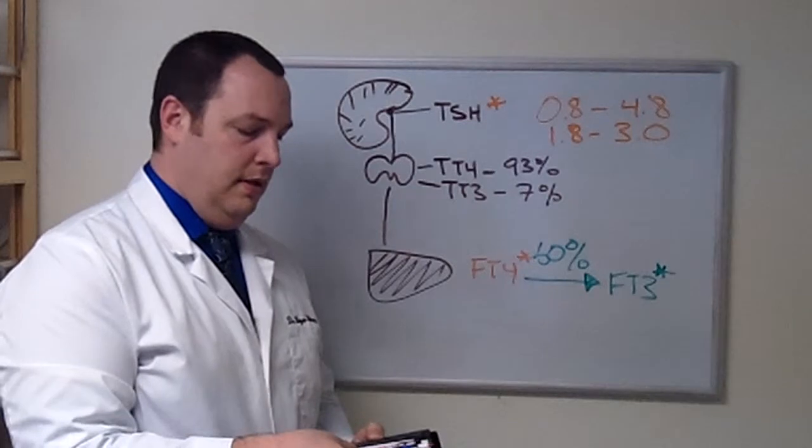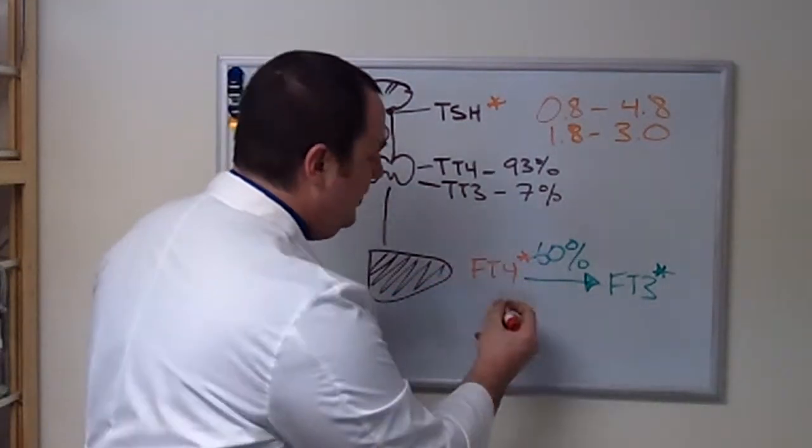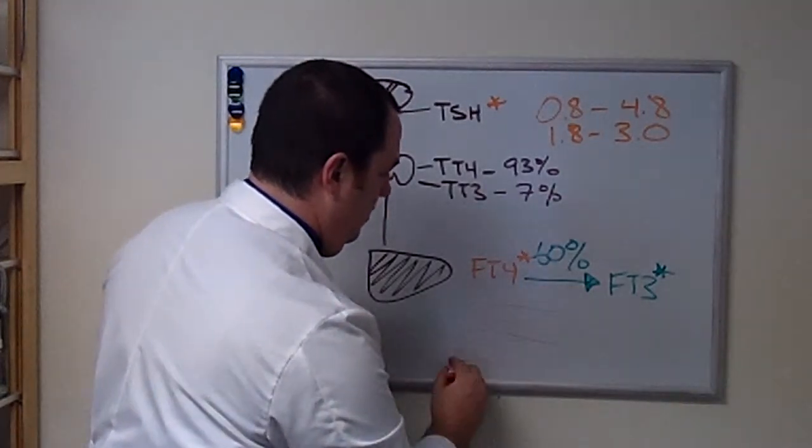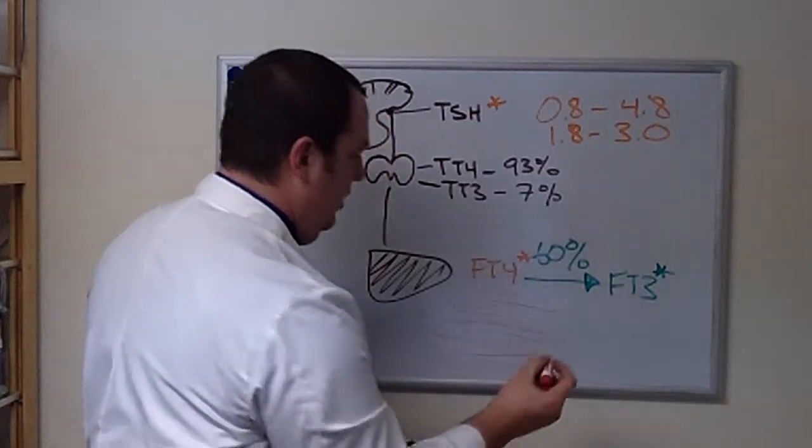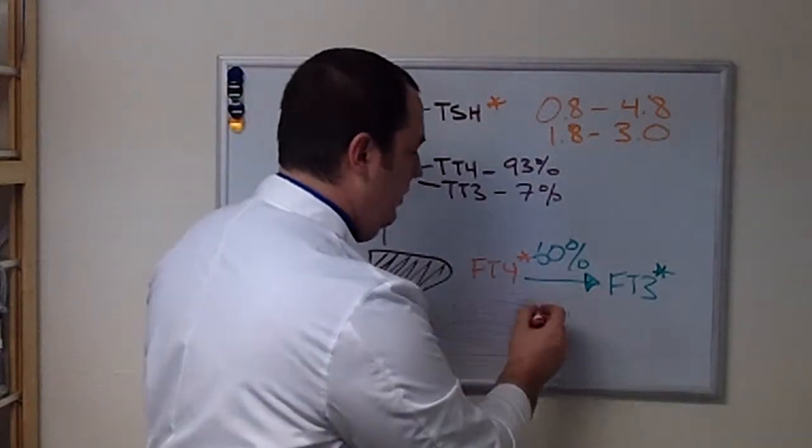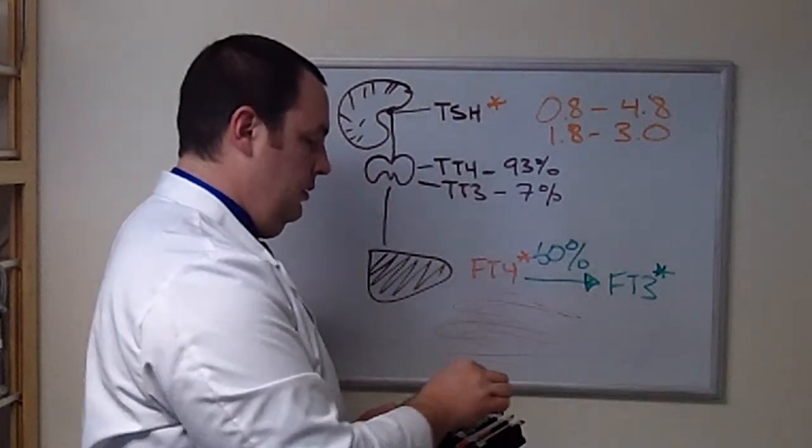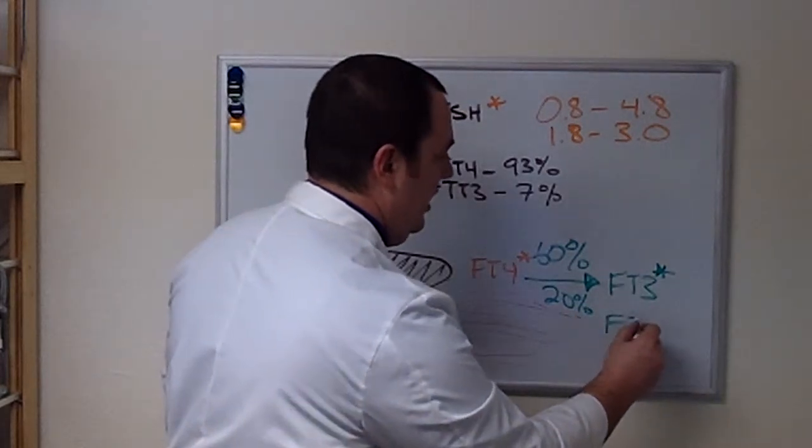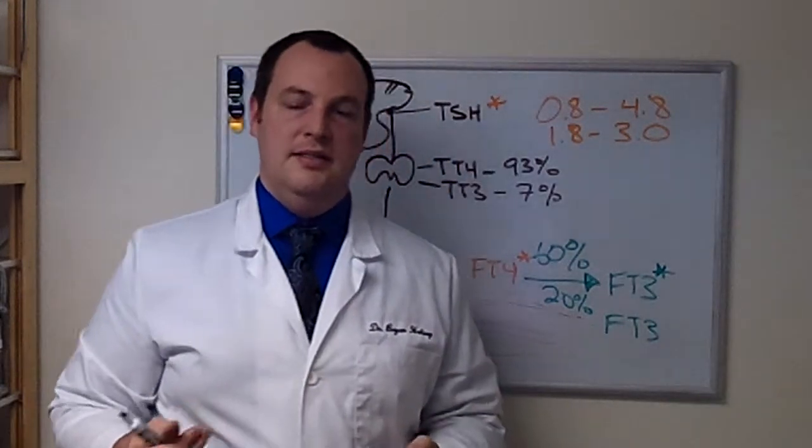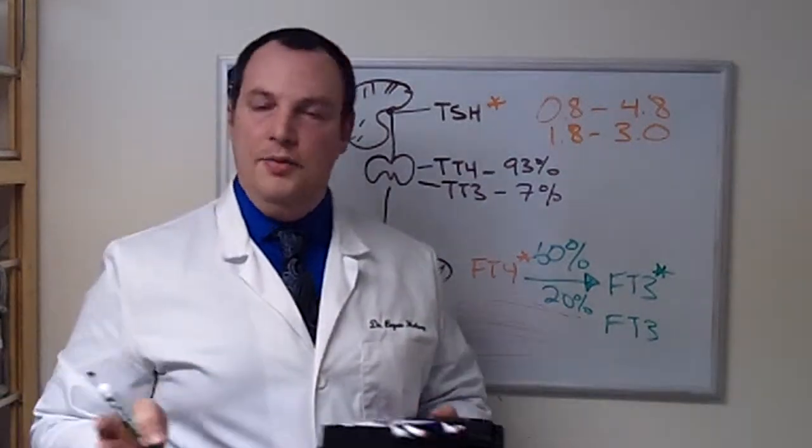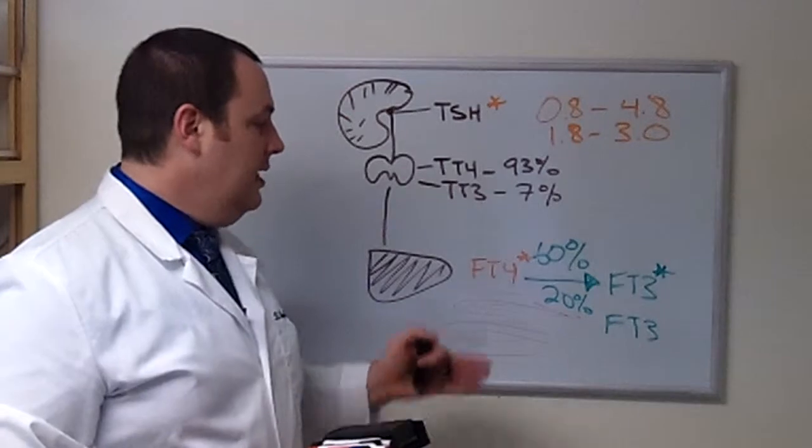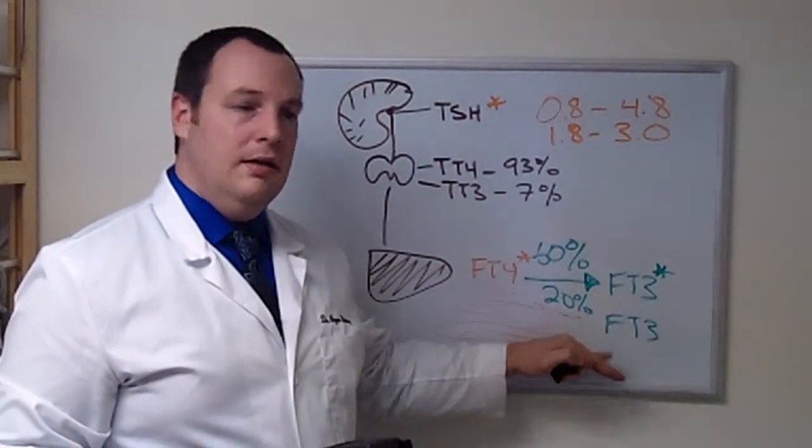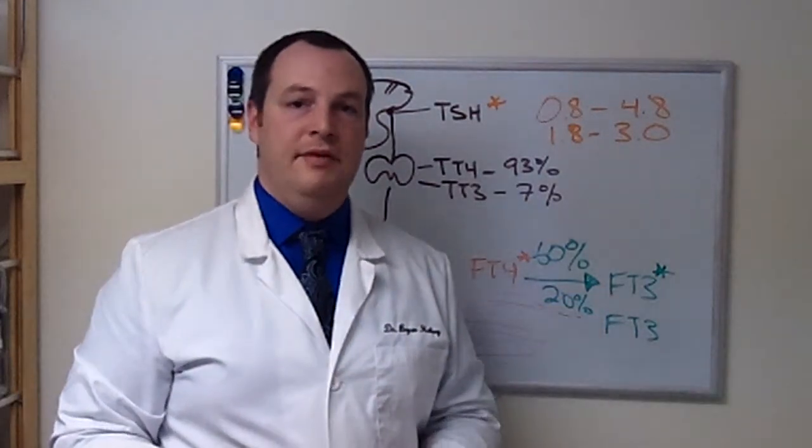Another common place that comes into metabolism of the thyroid is our intestines. Another about 20% of this occurs in the intestines. If we have inflammation in our intestines - if we feel bloated or constipated, alternating constipation and diarrhea - this could impact upwards of 20% of how you're making free T3. Again, free T3 being the most metabolically active thyroid hormone.